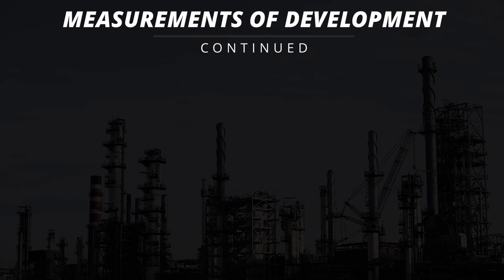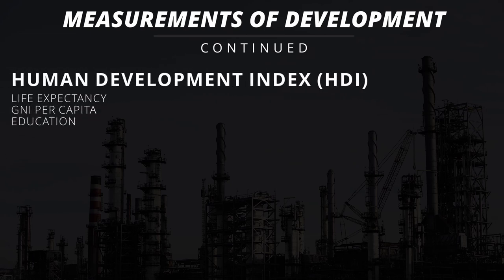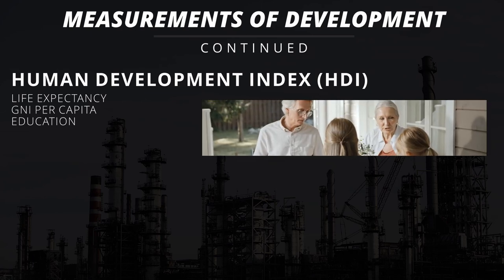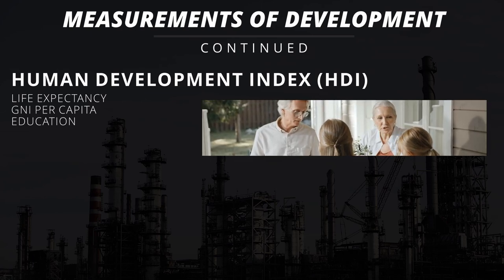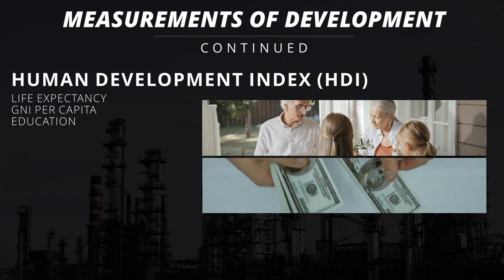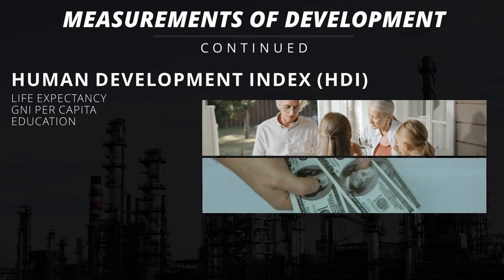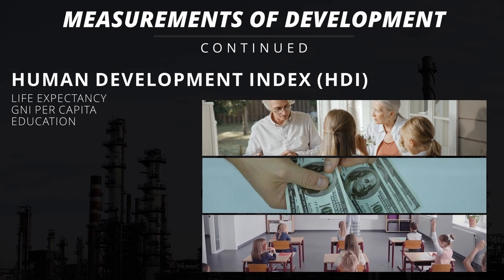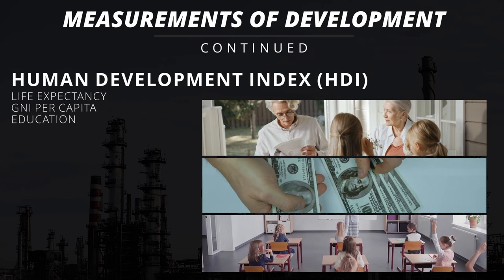First and foremost, let's finish our last measurement of development which is going to be the Human Development Index, also known as the HDI. This index is a combination of three measurements: life expectancy — the average age someone is expected to live to — GNI per capita — how much money the country makes on average — and education — what percentage of students go to secondary and post-secondary school.